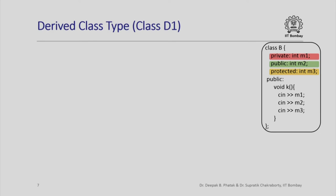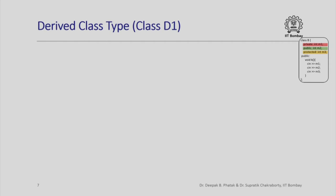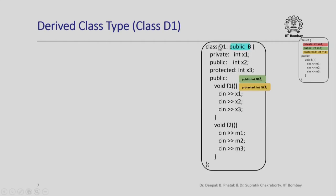Now we will take a detailed look at how access control specifications of individual data members in a base class interact with the mode of derivation when declaring a derived class. Here is derived class D1 derived from base class B in public mode, and D1 has two additional data members — one private, one public — and a third declared protected.